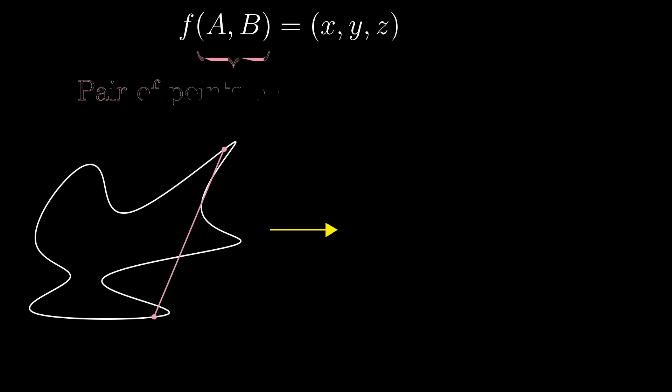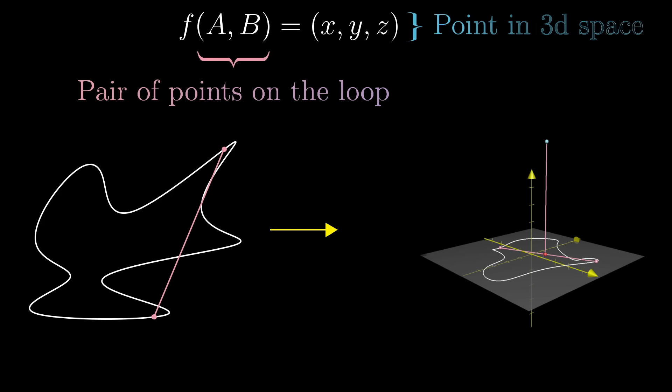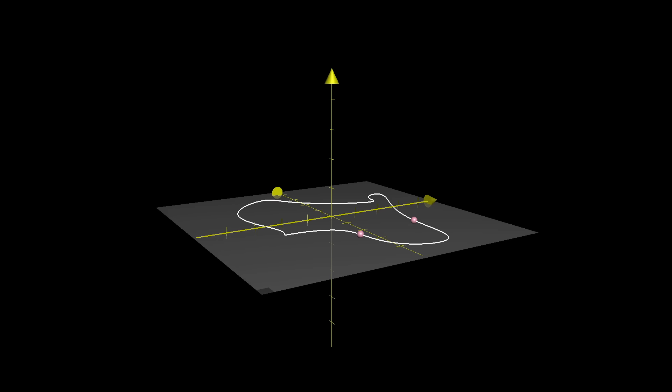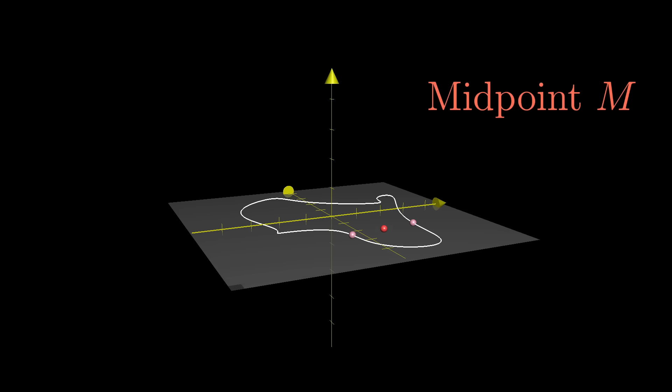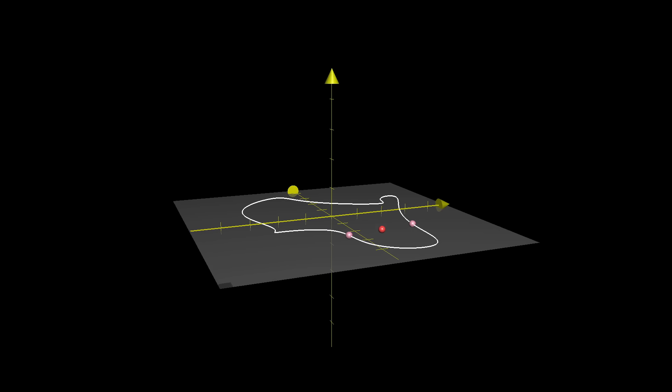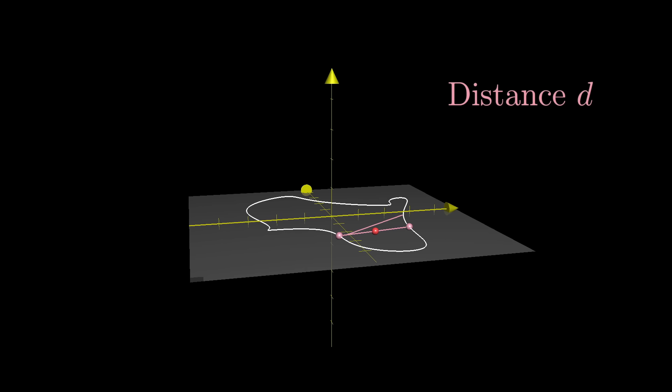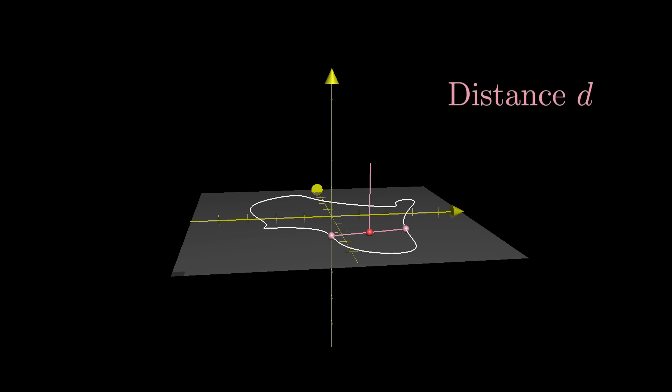The way we'll go about this is to define a function that takes in pairs of points on the loop and outputs a single point in 3D space which kind of encodes the midpoint and distance information. It will be sort of like a graph. Consider the closed loop to be sitting on the XY plane in 3D space. For a given pair of points, label their midpoint M, which will be some point on the XY plane, and label the distance between them D. Plot the point which is exactly D units above that midpoint M in the Z direction.